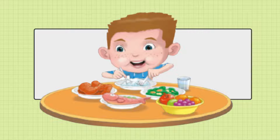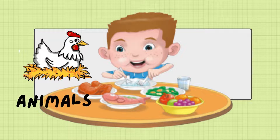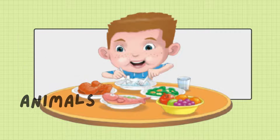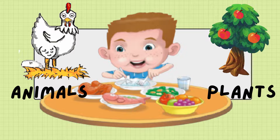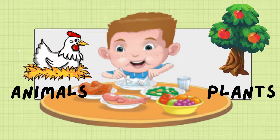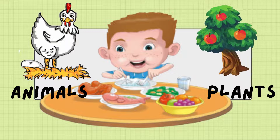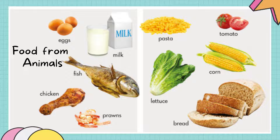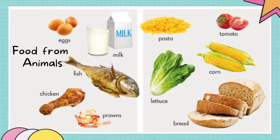Now if we classify the food that Tom is eating, we can find that some food comes from animals, like the chicken and fish, and some food comes from plants, like the vegetables and fruit. So from here we understand that food can come from animals, like egg, milk, fish, chicken, and prawns.